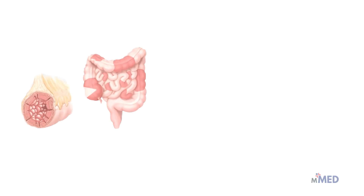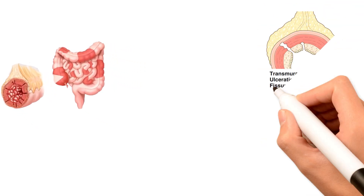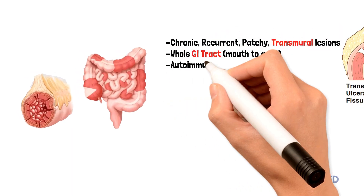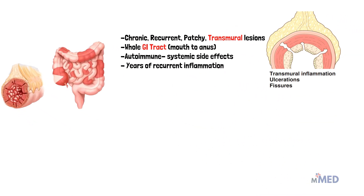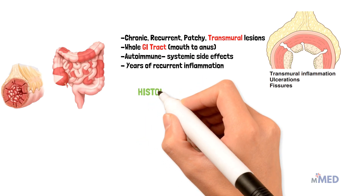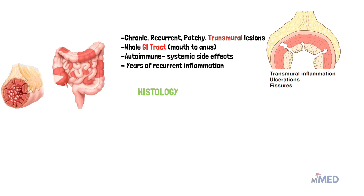Crohn's disease is a unique chronic condition with recurrent patchy transmural lesions from the mouth to the anus, especially in the terminal ileum. It can affect any part of the GI tract, unlike ulcerative colitis which only affects the rectum and colon. Crohn's disease is an autoimmune disease with more systemic side effects than ulcerative colitis. Transmural means it involves all layers of the GI tract, not just the mucosa and submucosa.